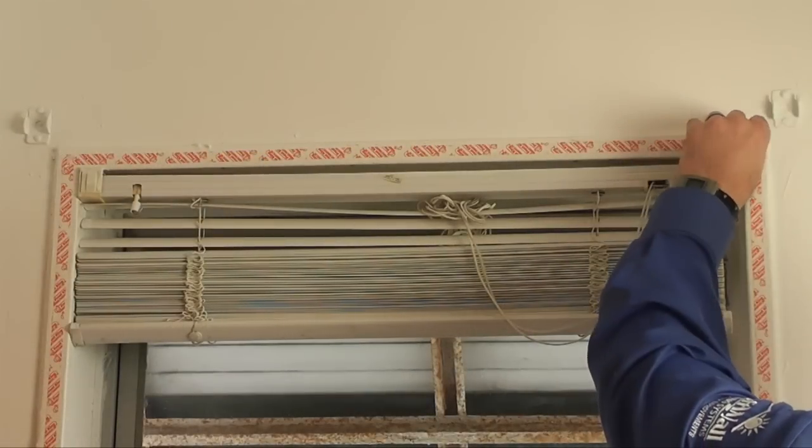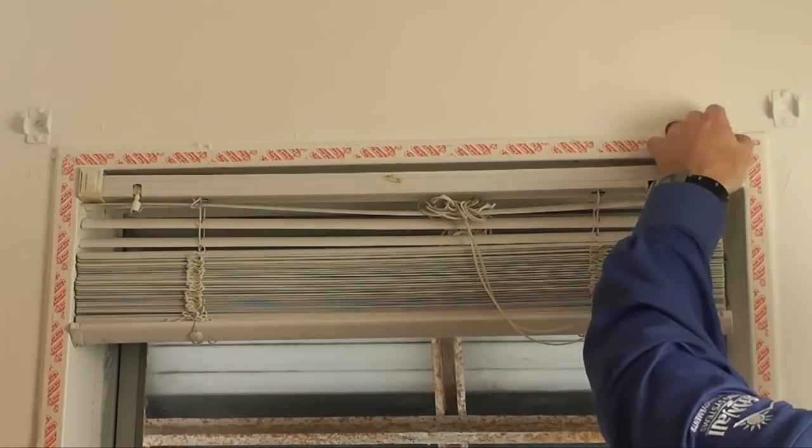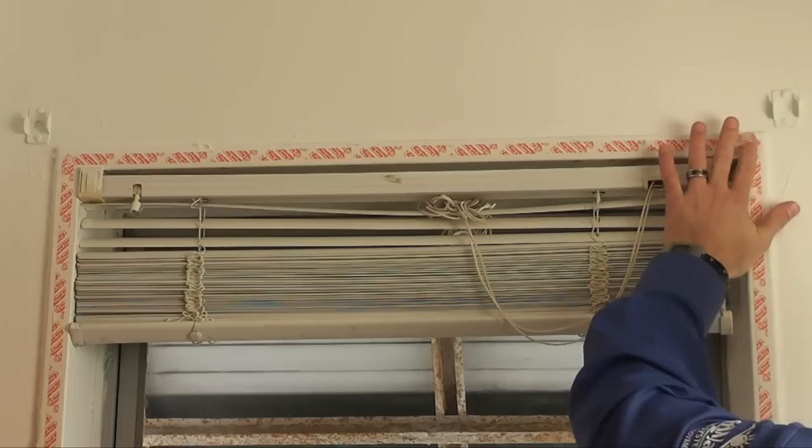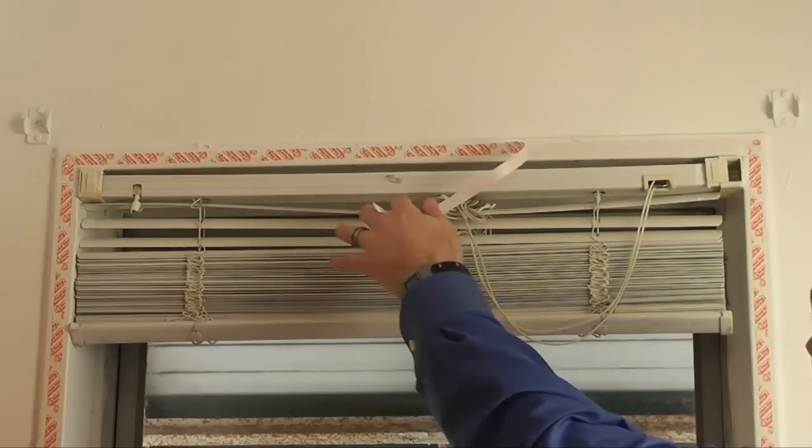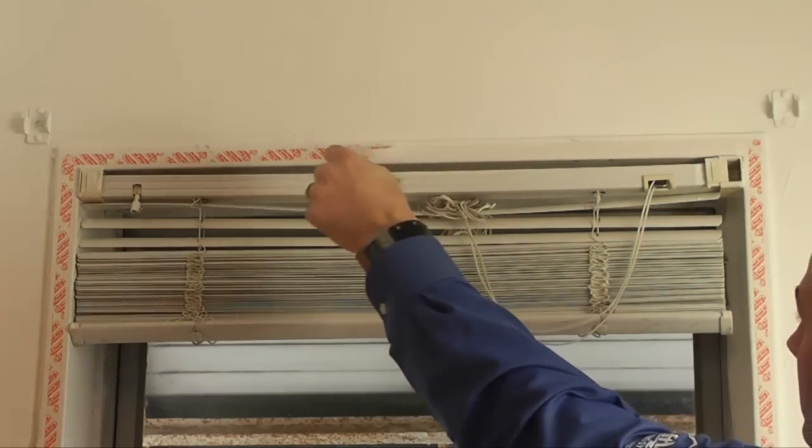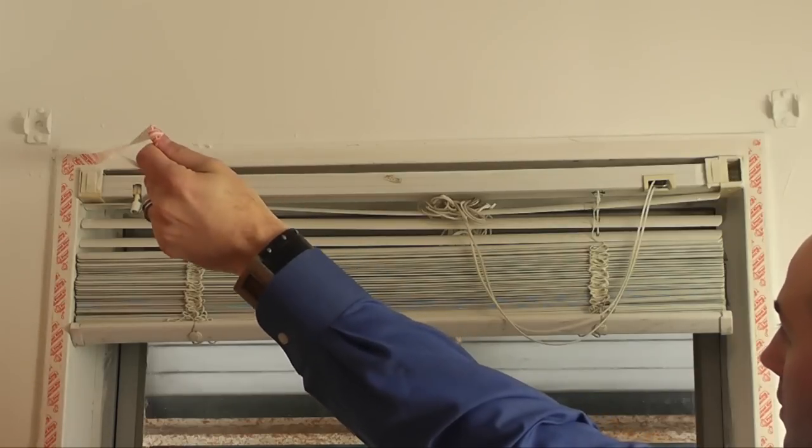Starting at the top of your window, peel the backing from the tape on the top section of the window only. If you remove the backing from the tape around your window all at once, you run the risk of having the film stick to the wrong places.